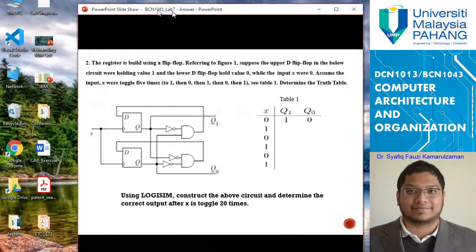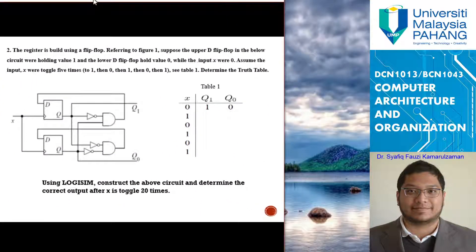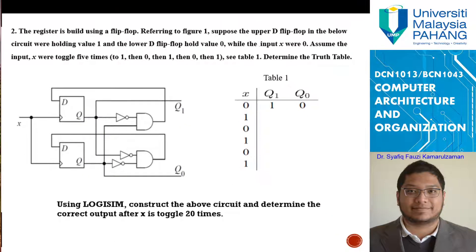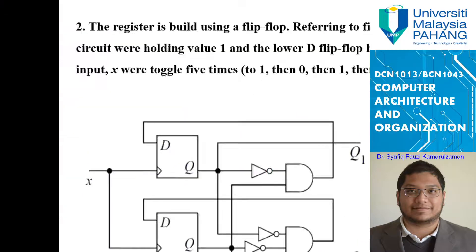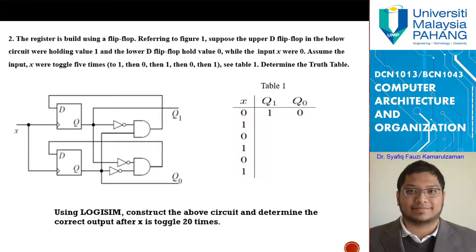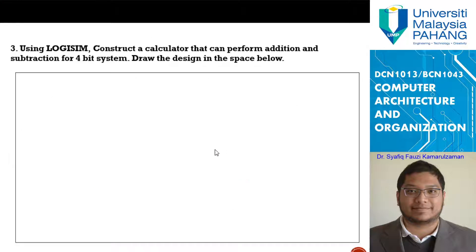Let's go towards the last question. This one is a little bit more difficult: using Logisim, construct a calculator that can perform addition and subtraction for a four-bit system. Design and draw the design in the space below.